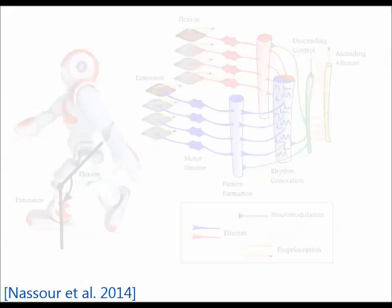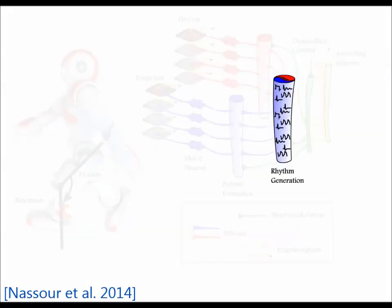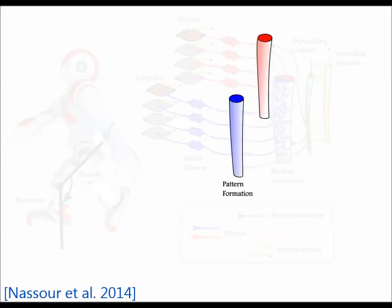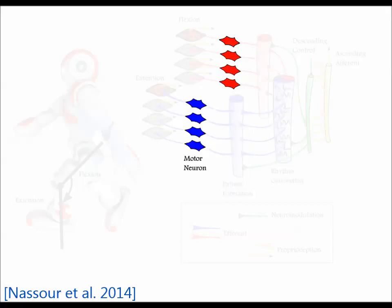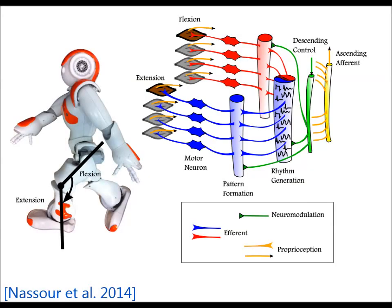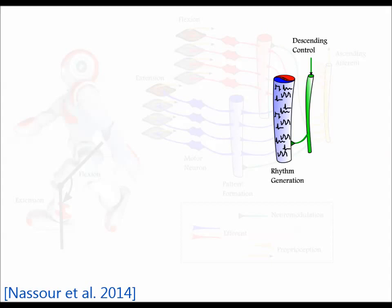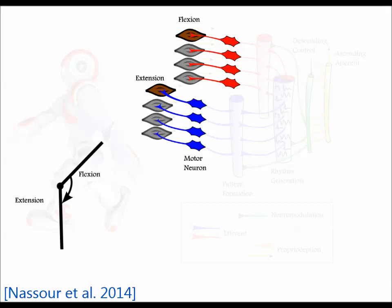This central pattern generator is separated into three layers: rhythm generation layer, pattern formation layer, and motor neurons layer. Similar to biological systems, this computational model of the CPG receives tonic drive from a high control level. The descending drive signal allows the CPG to generate basic locomotor behaviors by providing alternating activation of the corresponding motor neurons that drive joint actuators.